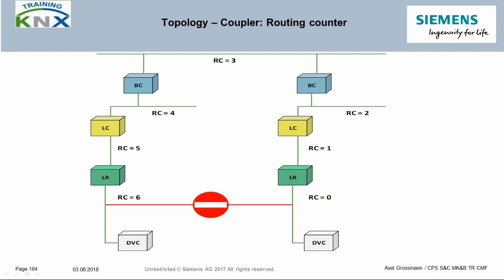Unfortunately, such errors occur more often than you might think. In order to locate them, one must prepare a certain strategy and proceed systematically. First, use the group monitor to see how the routing counter proceeds with otherwise identical telegrams. In the present example of a large loop over six line segments, one would see routing counters 6 and 0 if the telegrams come from the very bottom; one level higher would be routing counters 5 and 1; on the main line 4 and 2; and on the area line you would see two telegrams each with routing counter 3.